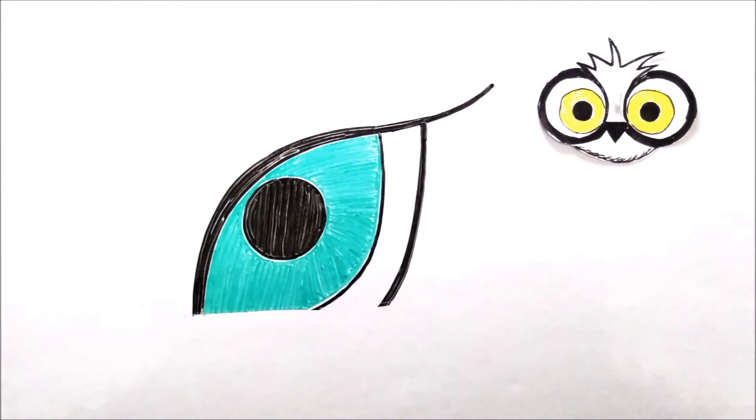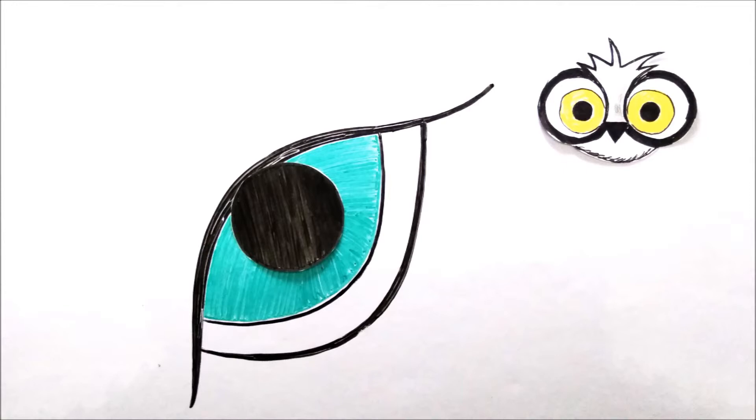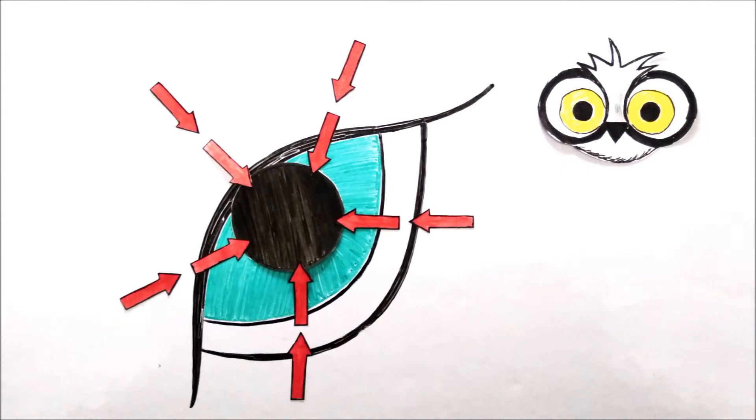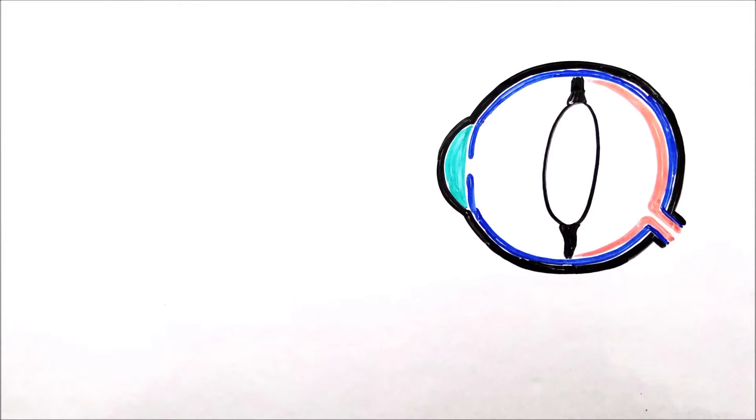These animals generally have large eyes and pupils. Their pupil open wider and allows maximum amount of light to enter the eye in the dark. Their lens are large and situated near retina. This also allows a lot of light to register on the retina.